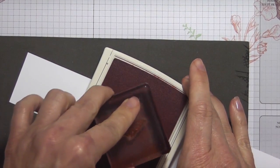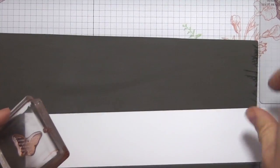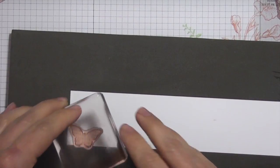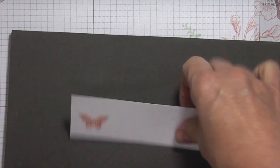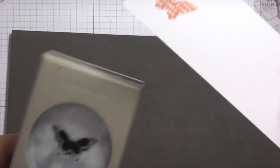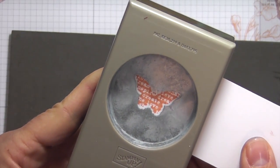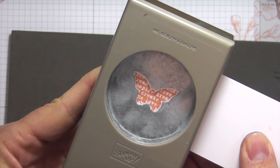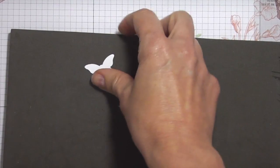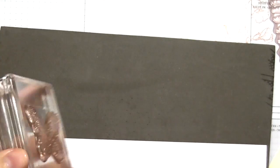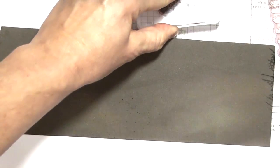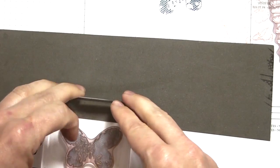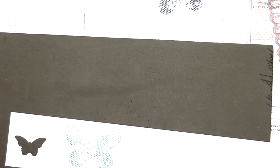I'm going to ink up the smallest butterfly in crisp cantaloupe and use the bitty butterfly punch to punch that out. Now I'm going to stamp the other butterfly in island indigo. I'm going to stamp off once and then stamp on the whisper white card stock.